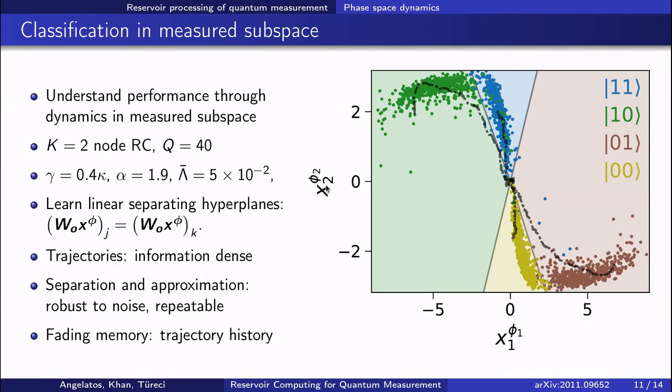So here I'm plotting the final measured quadratures x1 and x2 for each input signal indicating the different initial qubit states in different colors, and we see that each of these different classes of inputs generates reservoir states that fall into largely separate distributions.